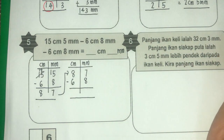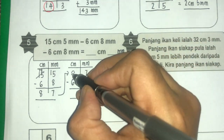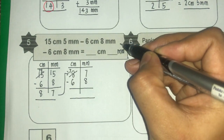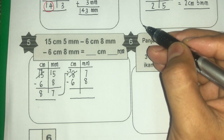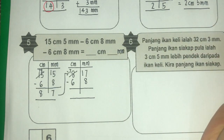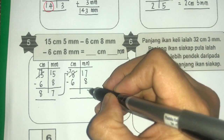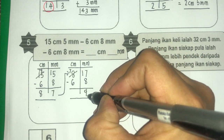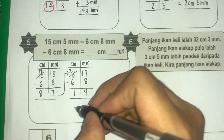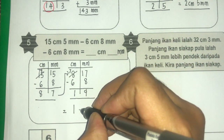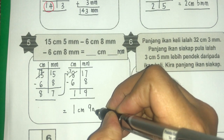Kita tolak seperti biasa. Pinjam, sini 7, 1 cm sama dengan 10 mm. 10 mm tambah 7 dapat 17. Jadi 17 tolak 8 ialah 9. 7 tolak 6 ialah 1. Oleh itu jawapannya adalah 1 cm 9 mm.